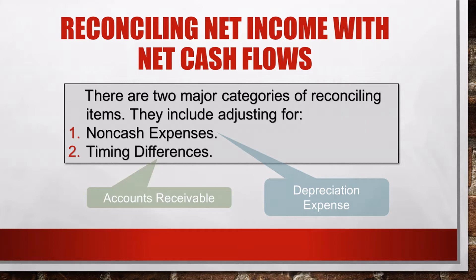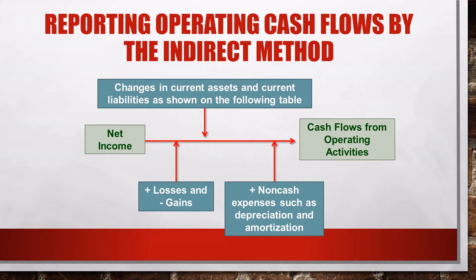Timing differences include changes in assets and liability accounts, such as accounts receivable, inventory, prepaid expenses, accounts payable, and accrued expenses payable. The indirect method starts with accrual-based net income and makes certain adjustments to arrive at cash flows from operating activities. Adjustments to accrual-based net income include adding back any non-cash items that were included to arrive at net income, such as depreciation and amortization.